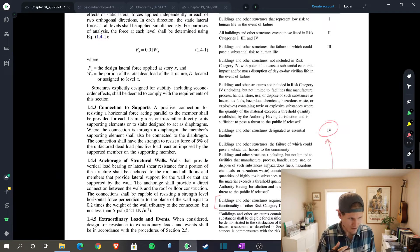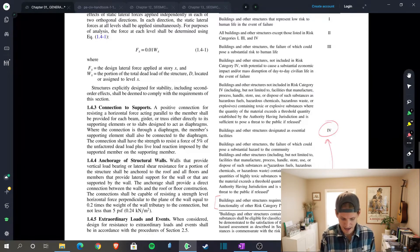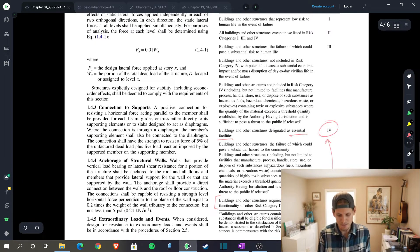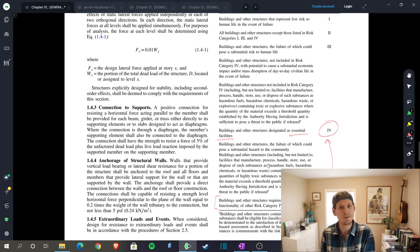Buildings and other structures required to maintain the functionality of other risk category 4 structures, and this also applies to components. This is an important piece of equipment in a hospital. Hospitals are defined as essential facilities, which means that a hospital is a risk category 4 structure, and then that unit within that structure is needed to be operational in a post-seismic event. So that means we need to